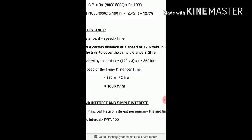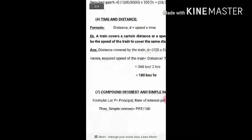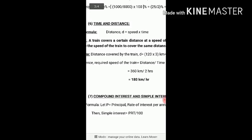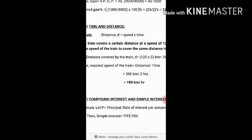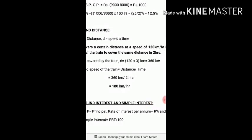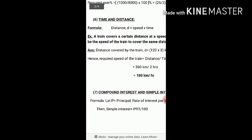To cover 360 km in 2 hours, we use speed equals distance divided by time. Distance is 360 km and time is 2 hours. So the speed of the train is 360 divided by 2, which equals 180 km per hour.